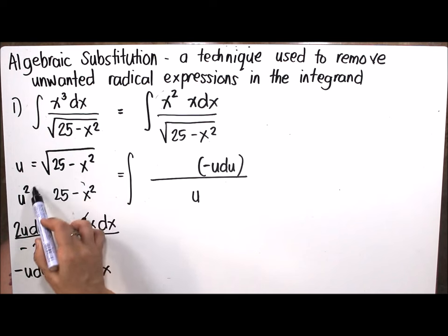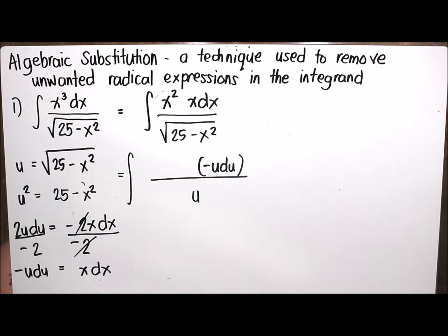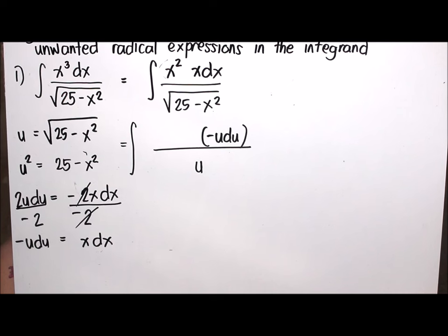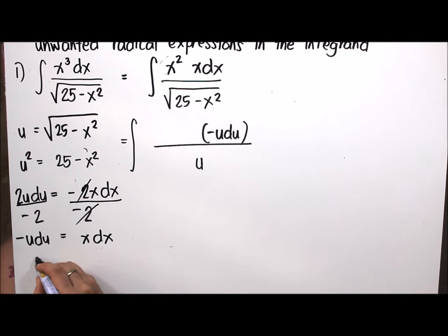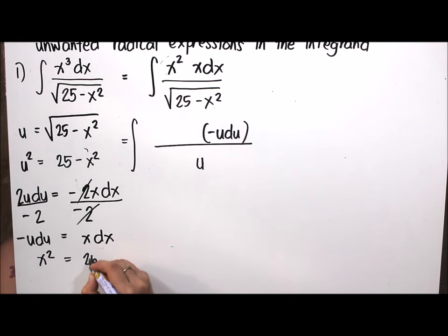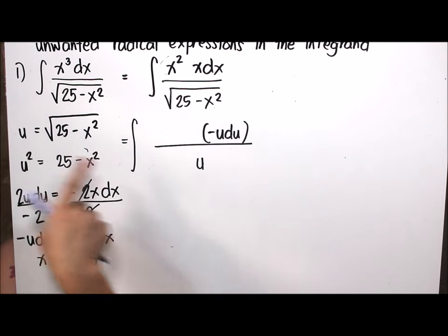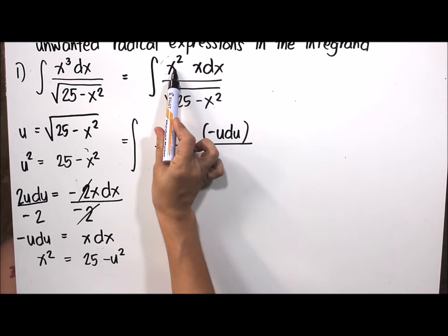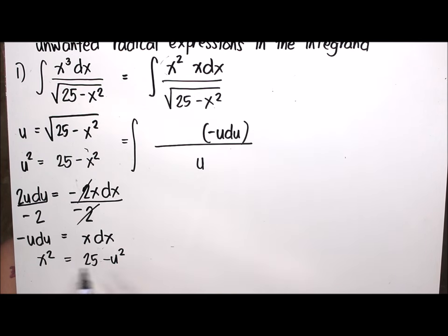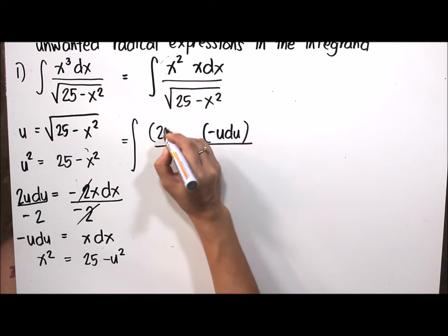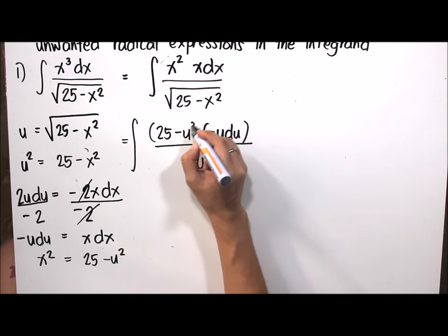Going back to the equation without the radical, u squared equals 25 minus x squared. We transpose x squared to the left side and u squared to the right side, giving us x squared equals 25 minus u squared. So we substitute 25 minus u squared in place of x squared.